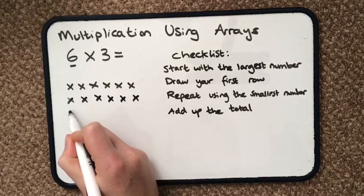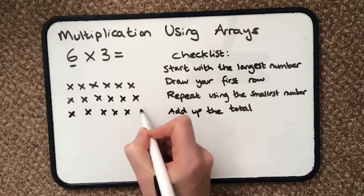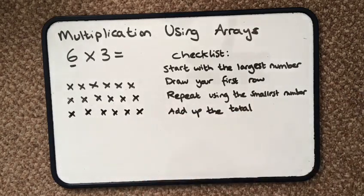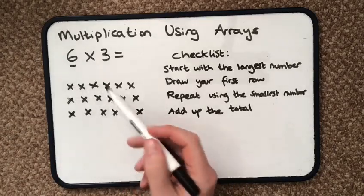So 6 groups of 3 or 3 groups of 6. I've got 3 groups of 6 here, or if I look at it this way, I've got 6 groups of 3.